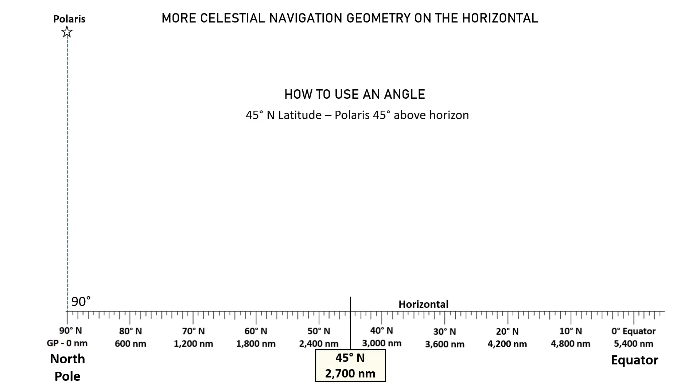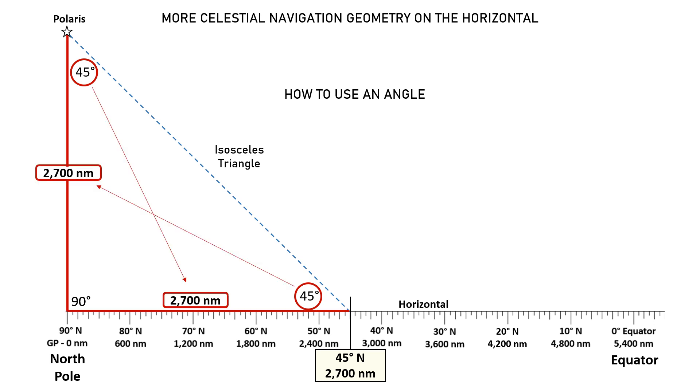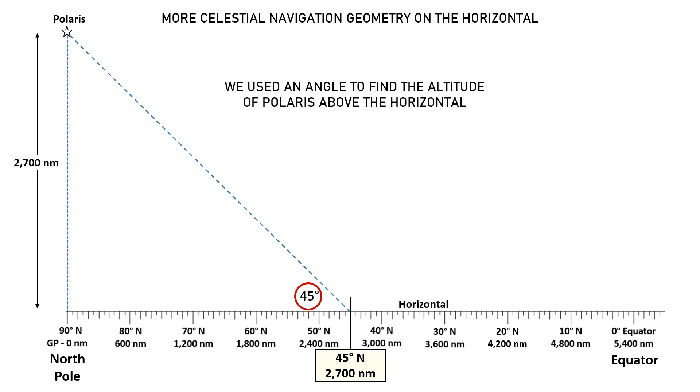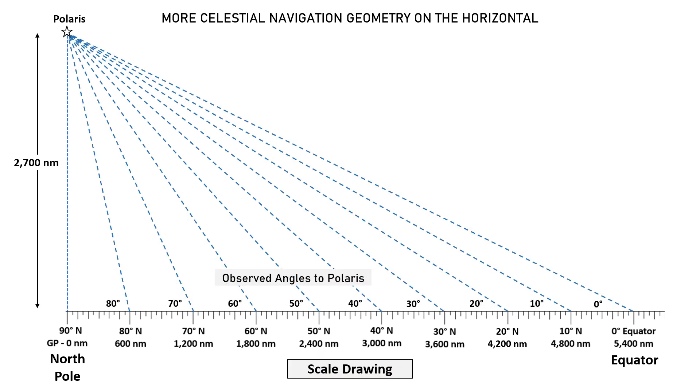And of course we add Polaris at zenith above the north pole. Well obviously Polaris would have an altitude above the north pole, and the easiest way to find this would be to use 45 degrees north latitude. That's because the observed angle to Polaris from that latitude is 45 degrees. Now since this is a right triangle, we know that the line of sight to Polaris forms a 45-degree angle with the zenith line. And since this forms an isosceles triangle, we know that the sides opposite of these 45-degree angles are of the same length. And look at that, we used an angle to find the altitude of Polaris above the horizontal.